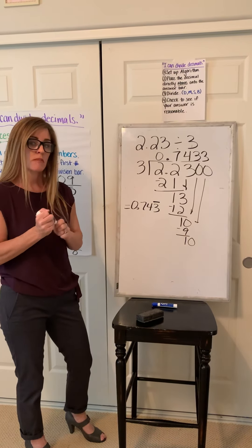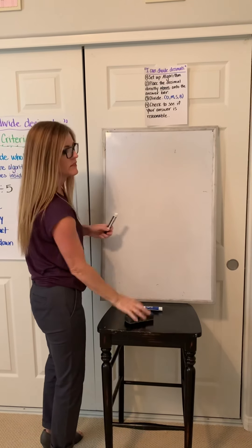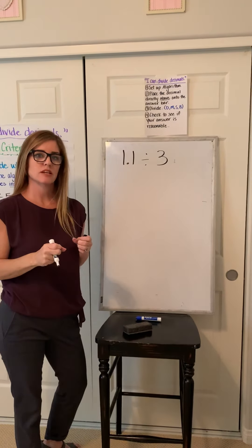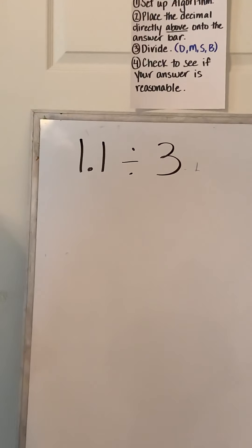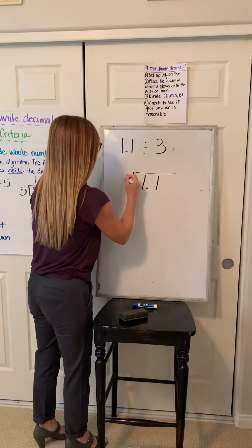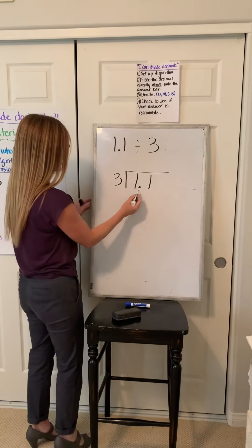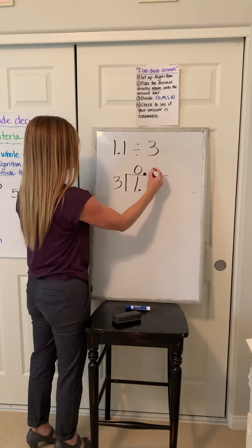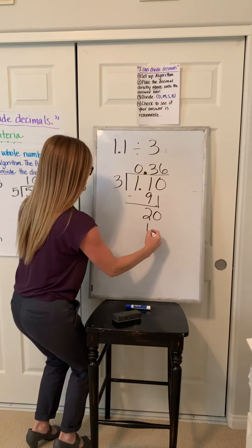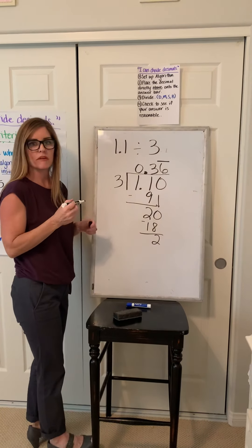I'm going to let you try one of those — it's going to repeat, see how you do. This will be our last problem. Go ahead and hit pause; you will have to add a zero and you will get repeating. Let's see how you did. Place up our decimal. Three won't go into one, but three will go into 11 three times. We're going to add a zero. Three into 20 would be six times, and you can see I'm going to just keep getting that two as a remainder. So we would end with putting the bar notation above the six.